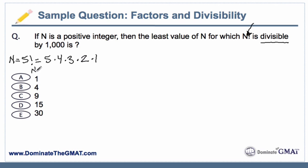The beauty of this question is that the answer choices are sitting there for us so we can test them. n could be 1, n could be 4, n could be 9, and so forth. If n is 1, then 1 factorial is just 1. Can 1,000 divide into 1? Of course not, because it's not bigger than 1,000. So answer choice A is incorrect.